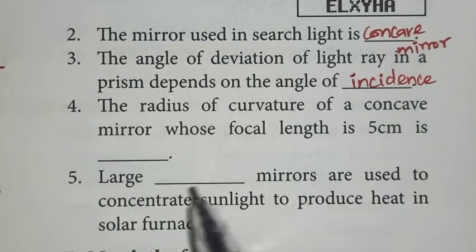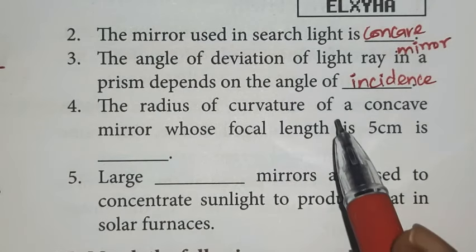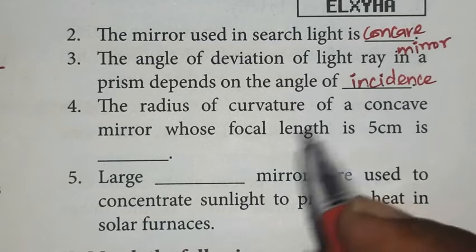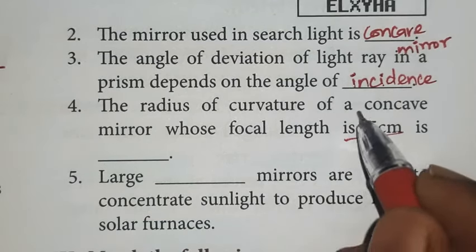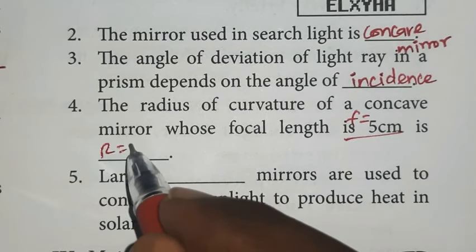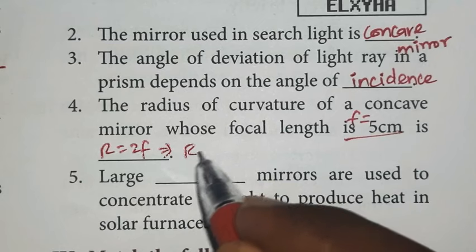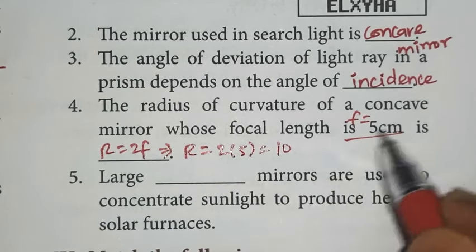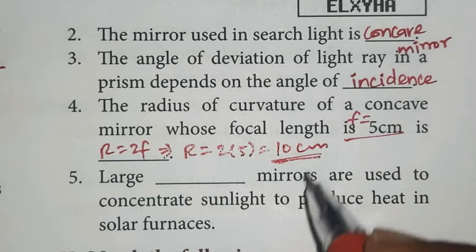Fourth one, the radius of curvature of a concave mirror whose focal length is 5 cm. If focal length is 5 cm, the radius of curvature is twice the focal length. So, r equals 2F is the formula. So, r equals 2 times 5, which is 10 cm. The radius of curvature is 10 cm.